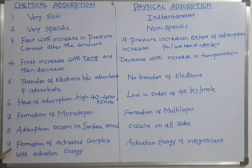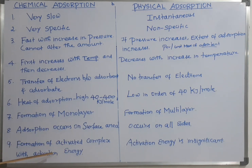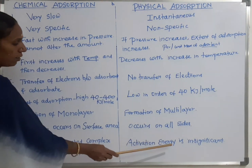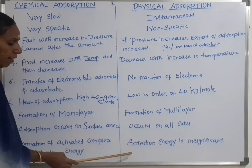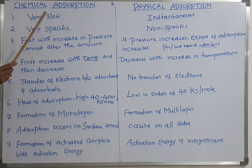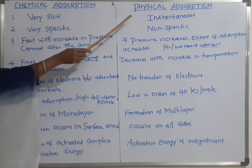Ninth difference: in chemical adsorption, an activated complex is formed with activation energy — heat is supplied to activate the process. But in physical adsorption, the activation energy is insignificant. These are the nine differences between chemical adsorption and physical adsorption.